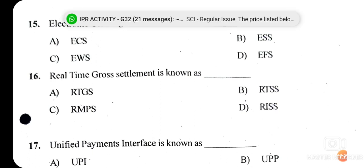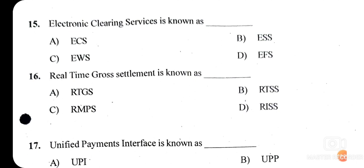RTGS is a fund transfer mechanism where the transfer of money takes place from one bank to another on a real-time basis and gross basis — hence the name Real Time Gross Settlement. This is the fastest possible money transfer system through the banking channel.